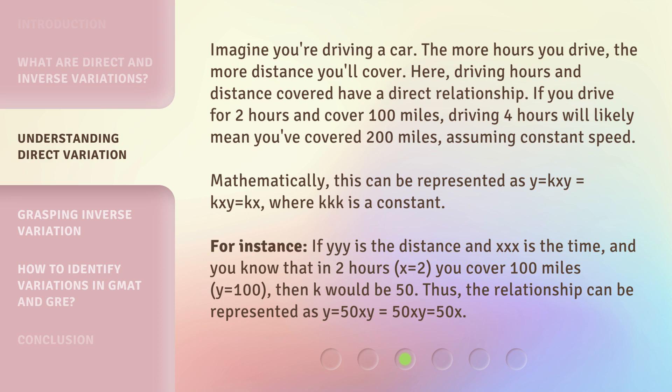For instance, if y is the distance and x is the time, and you know that in two hours (x=2) you cover 100 miles (y=100), then k would be 50. Thus, the relationship can be represented as y = 50x.